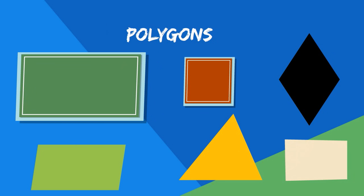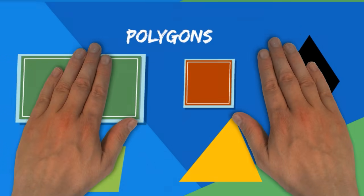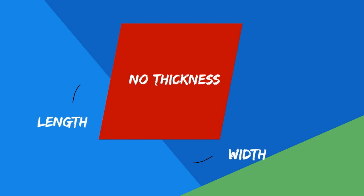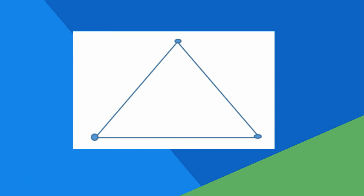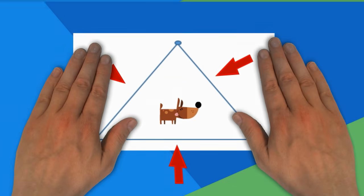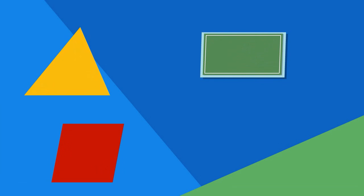Polygons are two-dimensional closed shapes. Two-dimensional shapes only have two dimensions such as length and width but no thickness. A closed shape does not have any openings and all of the lines connect. You can't leave the inside of a closed shape without crossing a line. Polygons have straight lines and do not have any curves.